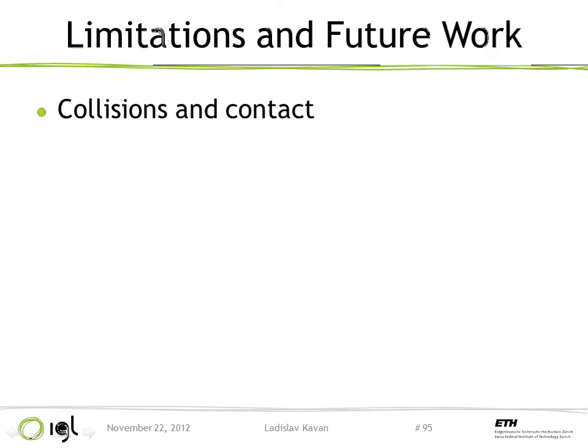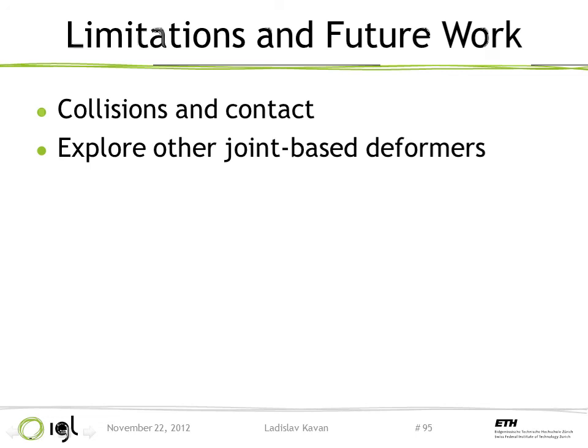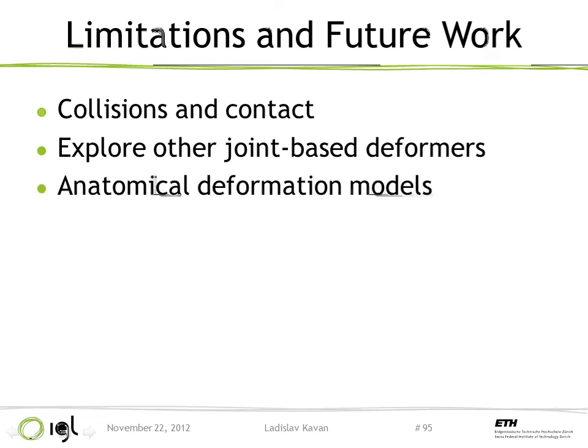Regarding limitations: the method tends to prevent self-collisions but does not guarantee anything — self-penetrations can sometimes occur. We only tested one possible joint-based deformer; it would be very nice to explore the entire space. There are trivial choices such as pure linear or pure spherical skinning for some joints, and more interesting options like a non-linear blend between linear and spherical blending based on bend angle. Additionally, we use only a very crude model for our elastic deformation energy — at a minimum we could better model the geometry of bones and muscles, and we could go as far as a full biomechanically accurate simulation of the human body.